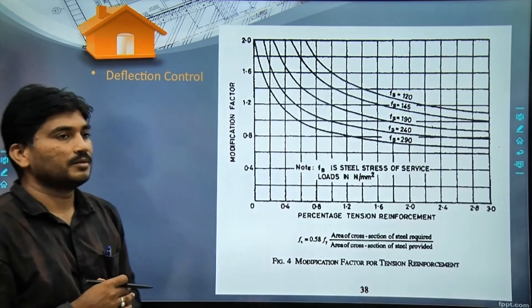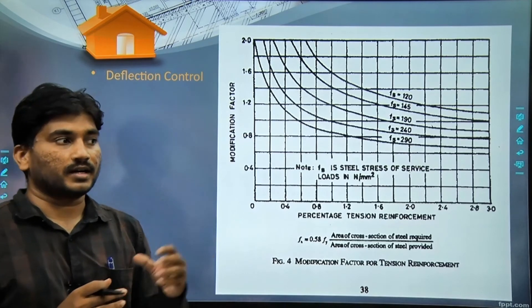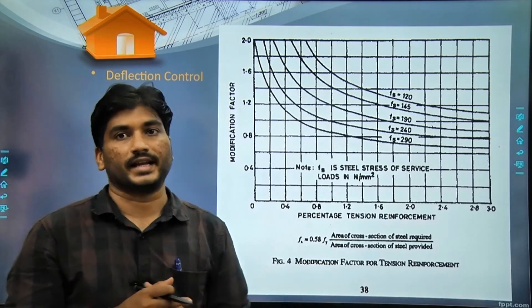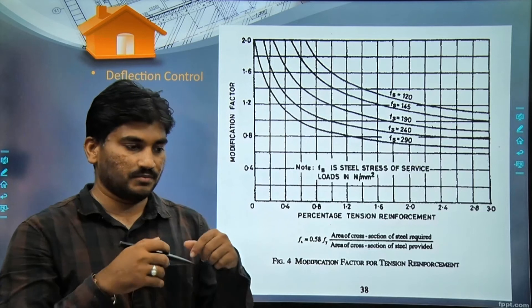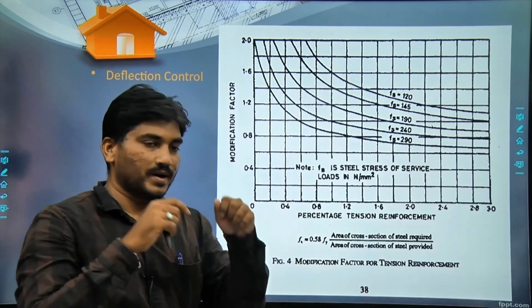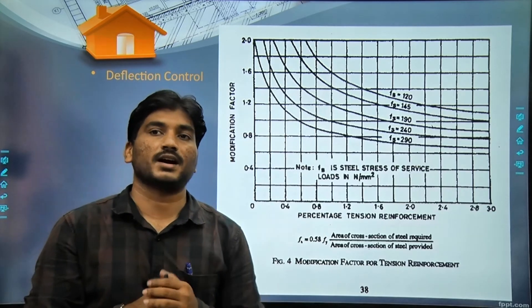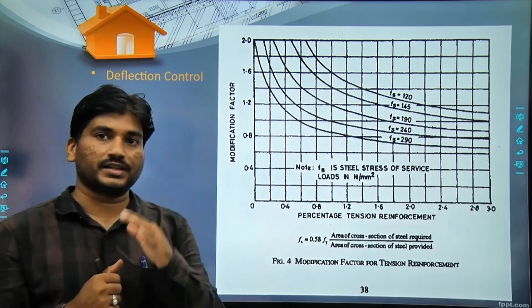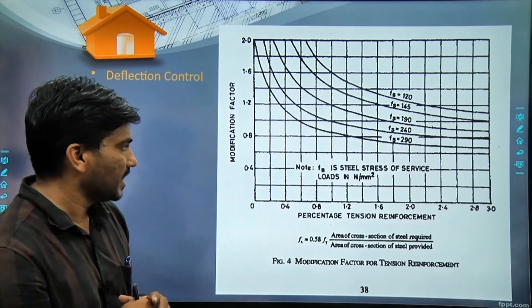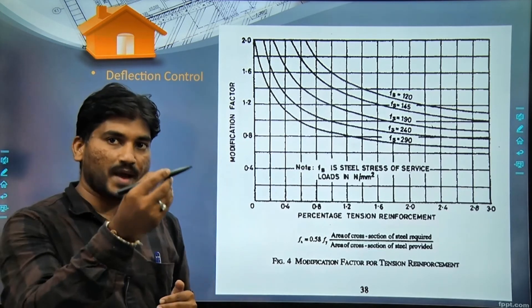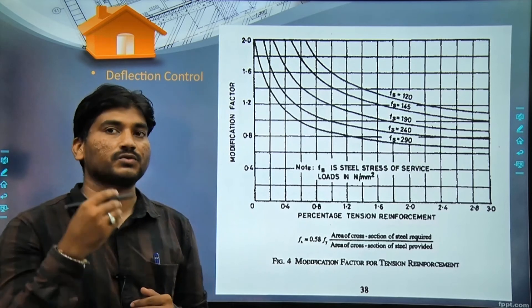After that, depending upon the reinforcement or steel in tension area - tension area means when we bend something, one side will have tension and one side will have compression - so according to the steel we provide in tension area, we have to modify the span by depth ratio.